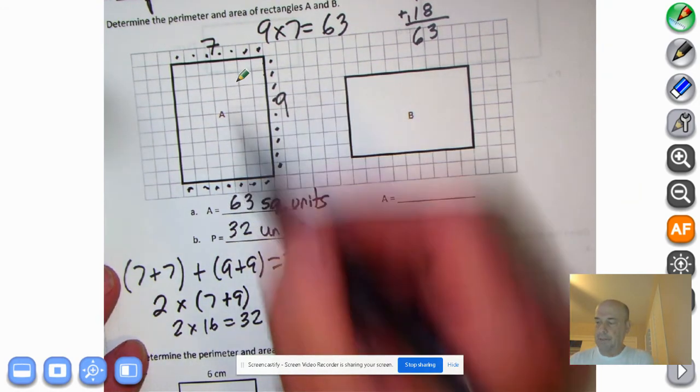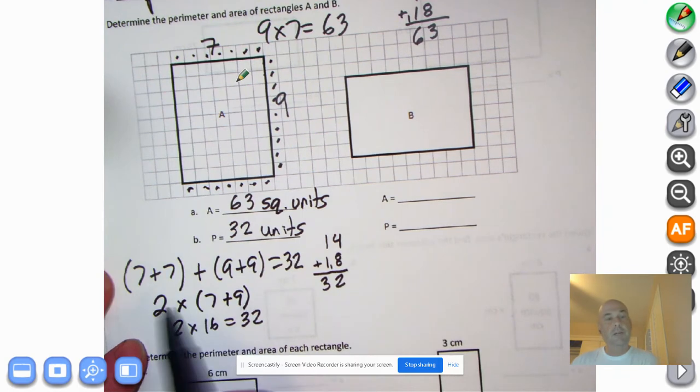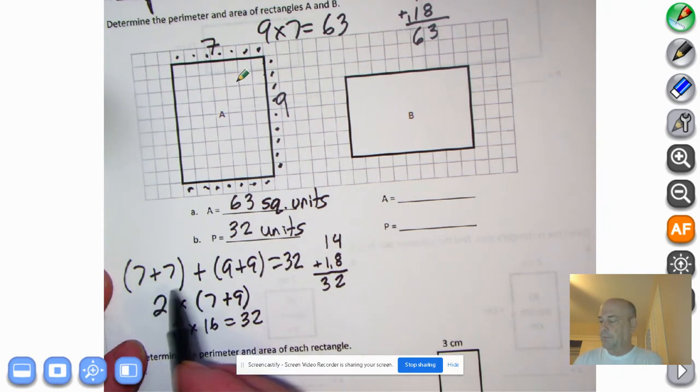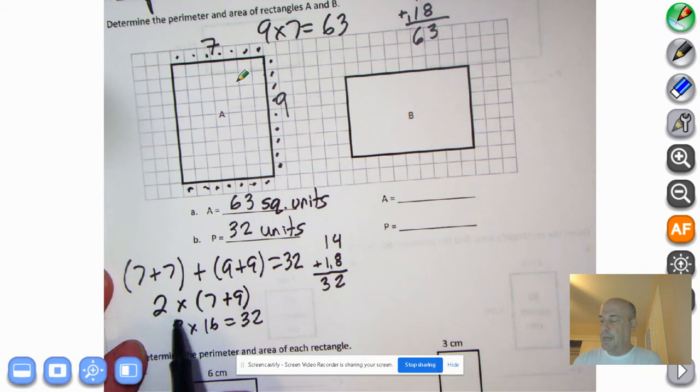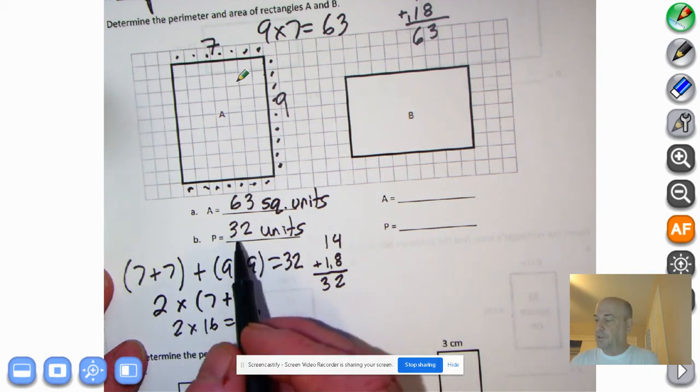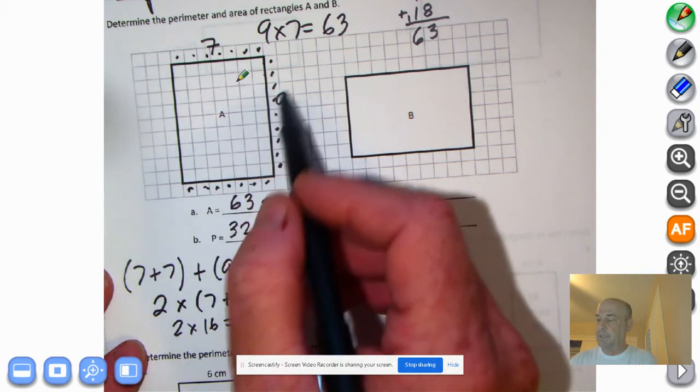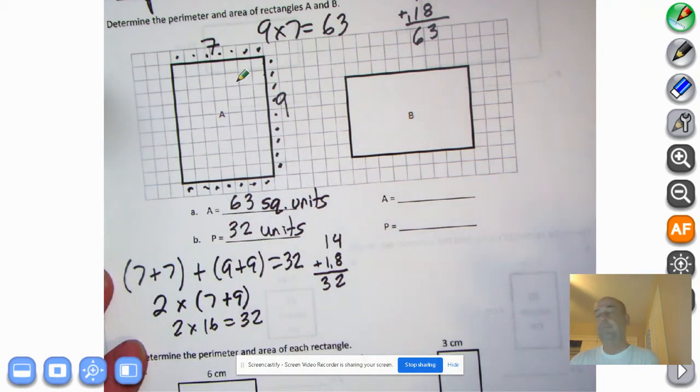So we know that this side is seven. They're equal. We know this side is nine. So what we could do is seven plus seven plus nine plus nine. So seven plus seven is 14. Nine plus nine is 18. And 14 plus 18 is 32. But we could also go two times seven plus nine, so two times 16 would equal 32. So my answer here is 32 units. Seven plus nine is 16. There you have it.